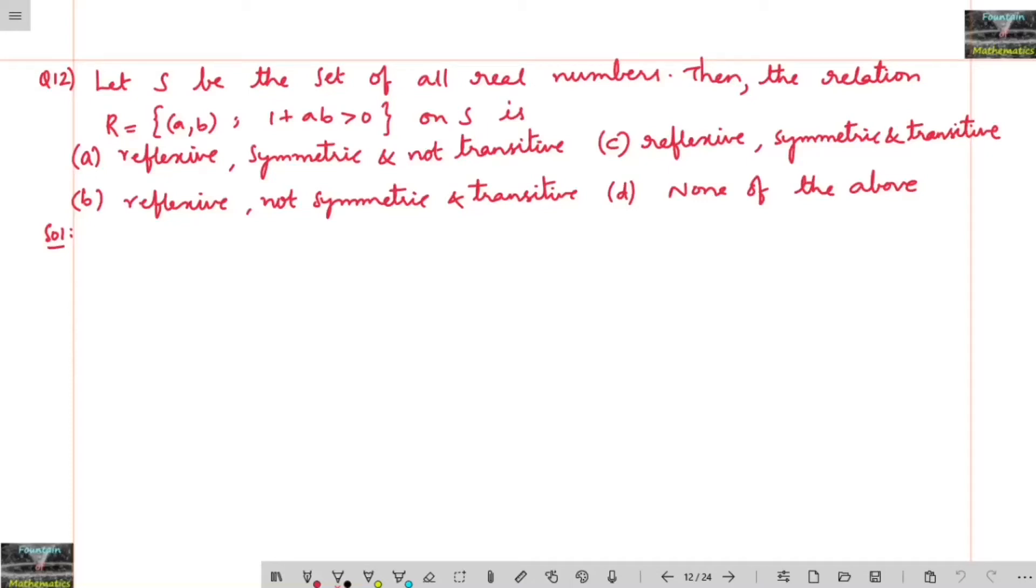Let S be the set of all real numbers. Then the relation R is equal to (a, b) such that 1 plus ab is greater than 0 on S.